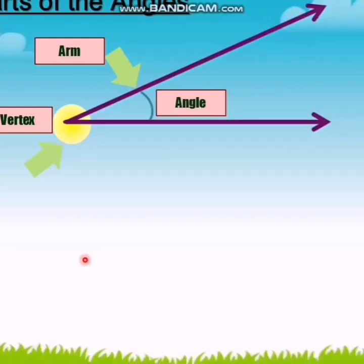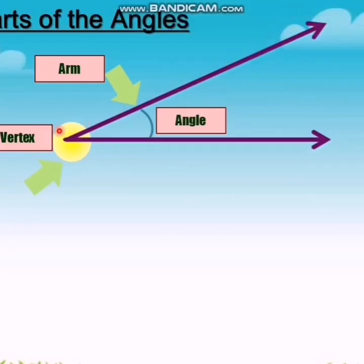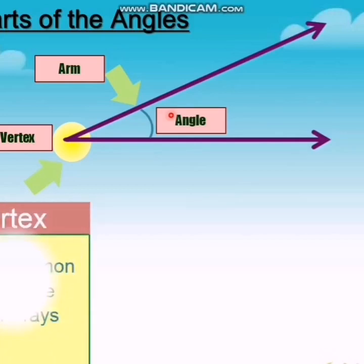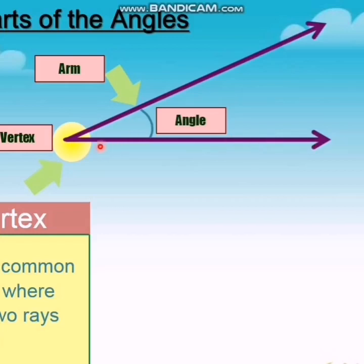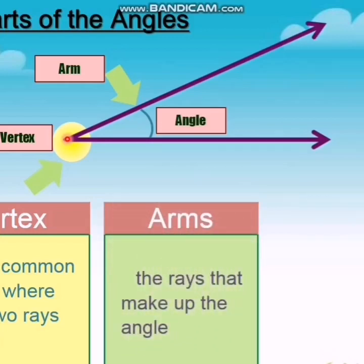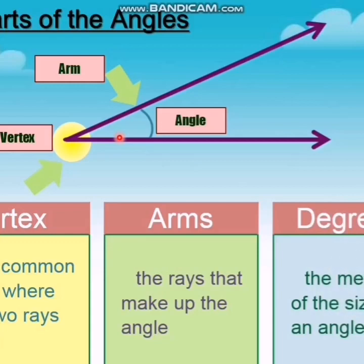Now, the parts of an angle. An angle has two arms, one vertex, and the angle itself. The vertex is the common point where the two rays meet. The arms are the rays that make up the angle. The angle is measured in degrees — the size of the measurement is known as the angle.